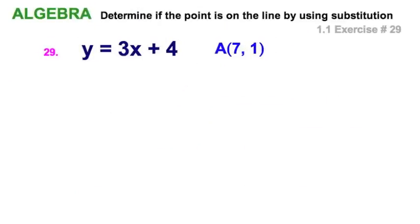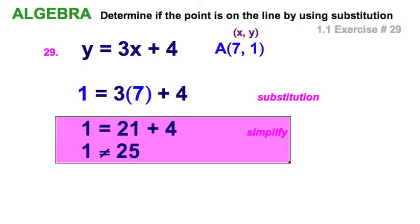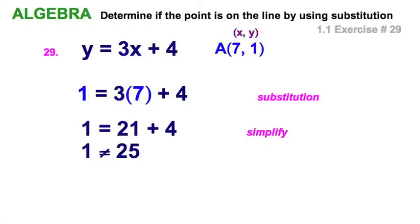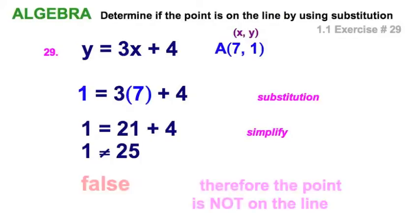Well, that was so much fun. Let's do it again. Again, an ordered pair X comma Y, (7, 1), and the linear equation Y equals 3X plus 4. Again, with the substitution and the simplification. Oh, something is up in this problem. We notice when we evaluate, the number 1 is not equal to the number 25. Therefore, the point is simply not on the line.